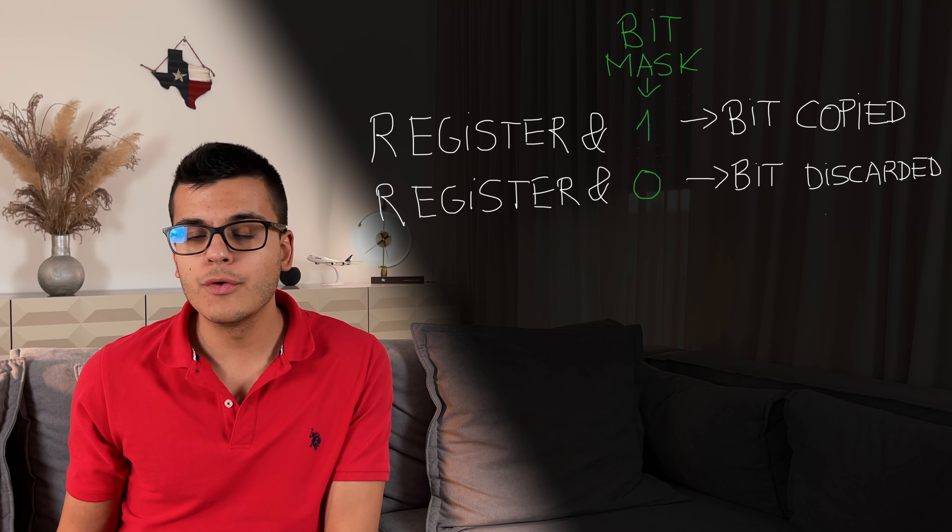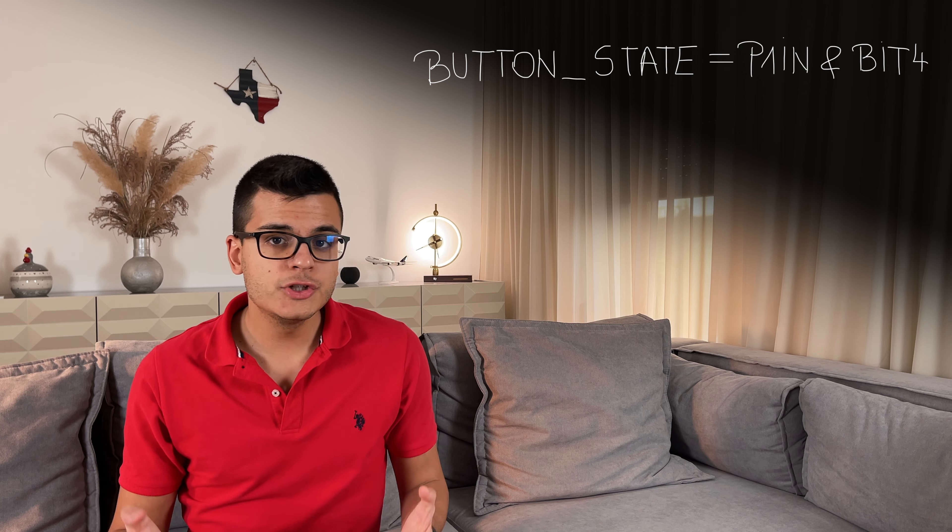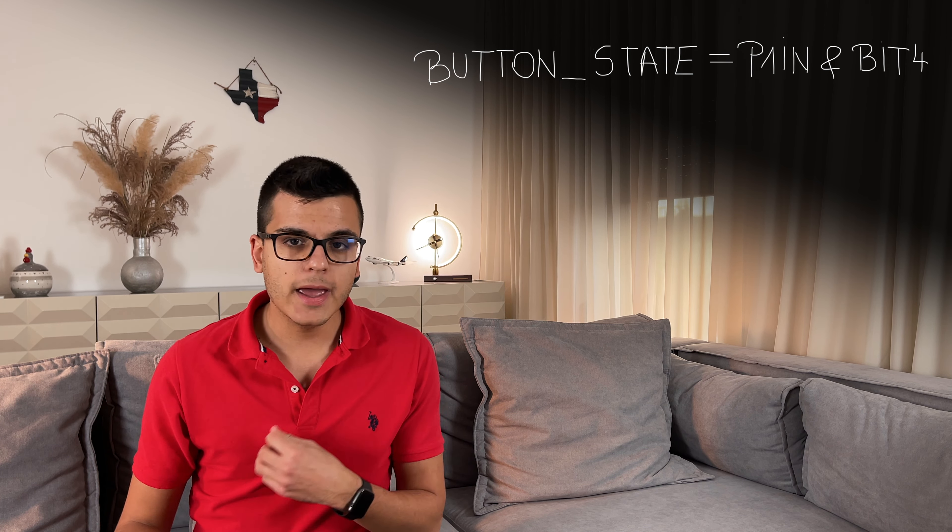Let's start off with reading bits from registers. In order to extract just one bit out of a register, we have to use a bit mask and the AND operator to get just the bit we care about. Using the AND operator we can control which bits out of the register we will read and which of them we will ignore. If we AND with a 1 the value of that bit will get copied over, and if we AND another bit with 0 the value of that bit won't get copied over. Our mask is simply going to have one bit set to 1, which is the bit we actually want to read from the register. For example, if we want to copy the value of bit 4 of a register into a variable named button_state, we write: button_state = P1IN & BIT4.